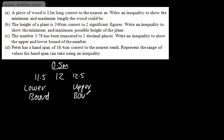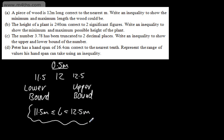All we need to do now is write an inequality to represent the values that the length of wood can take. I'm going to call it L. So L is greater than or equal to 11.5 metres, yet strictly less than 12.5 metres. With the upper bound, we have a strict inequality such that we can't include 12.5. We can include the lower bound, but we don't include the upper bound. So we take half a unit smaller and larger than the rounded measurement and put this in an inequality.